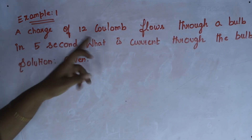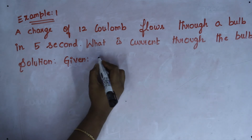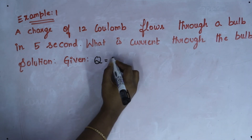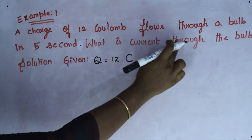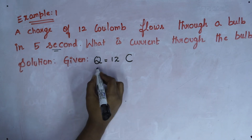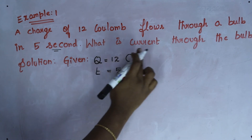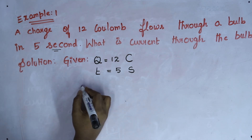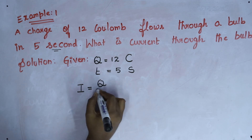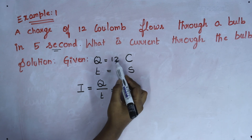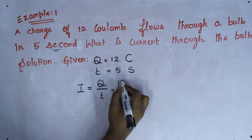Now the first example: a charge of 12 Coulombs flows through a bulb in 5 seconds. What is the current through the bulb? Given: charge Q = 12 C, time t = 5 s. We know the formula for current: I = Q / t. We substitute the given values directly into the formula.